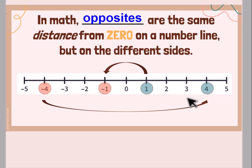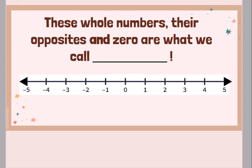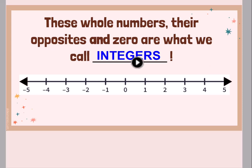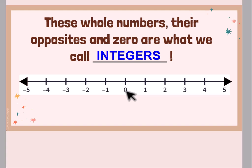Basically, a positive and a negative are opposites. Negative one is opposite positive one; negative four is opposite positive four; three would be opposite negative three. These whole numbers, their opposites, and zero are what we call integers. Integers is a number classification. They include all of the numbers — positive whole numbers, the numbers to the right of zero on the number line, and the numbers to the left of zero on the number line, the negative whole numbers, and of course zero as well.